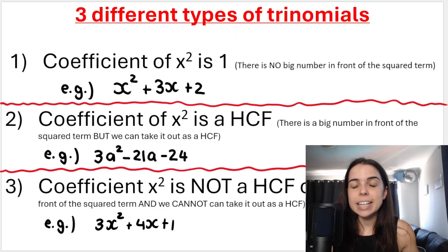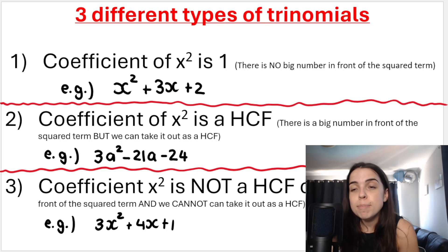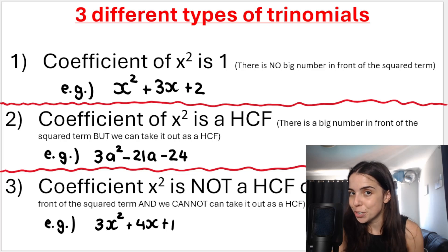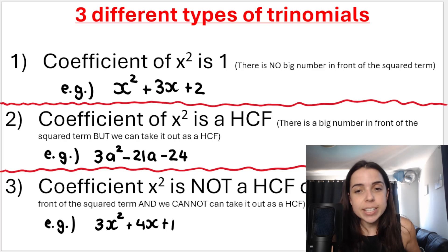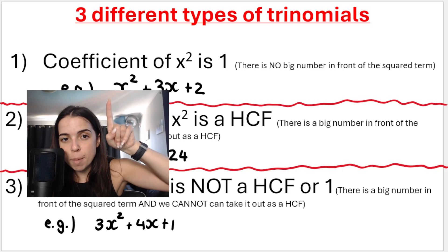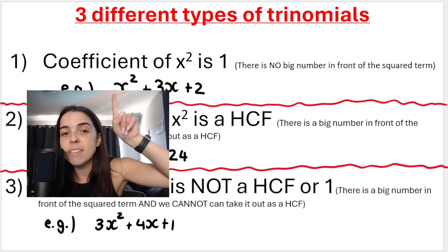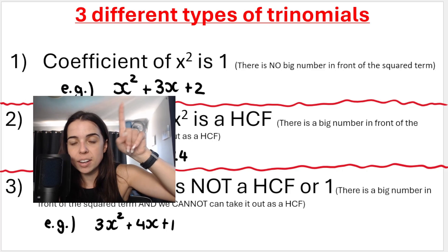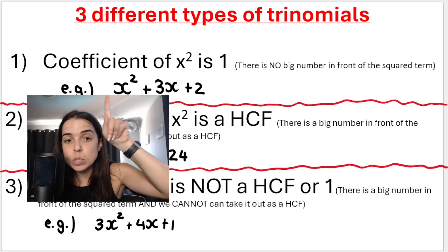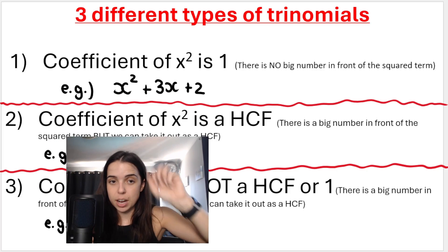There are technically three different types of trinomials that you can be asked in mathematics. The first one is when the coefficient of the squared term is one. Any variable can be used — you can see the coefficient, or the number before it, is one, an invisible one. We can't take out our highest common factor, and the coefficient is one. That's the first type.